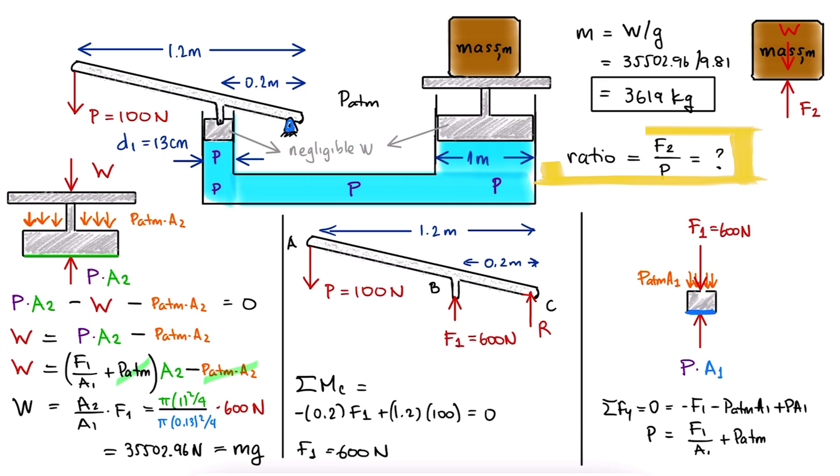As for the second question, the ratio between the output force and the input force is the ratio between the weight, which is a force and is the output in this case, over the original external load P. This ratio is therefore equal to roughly 355.